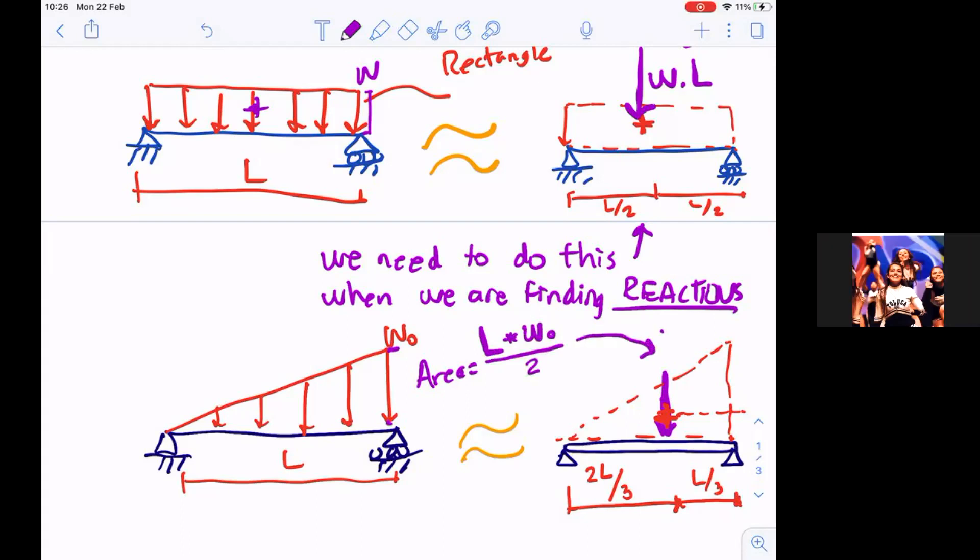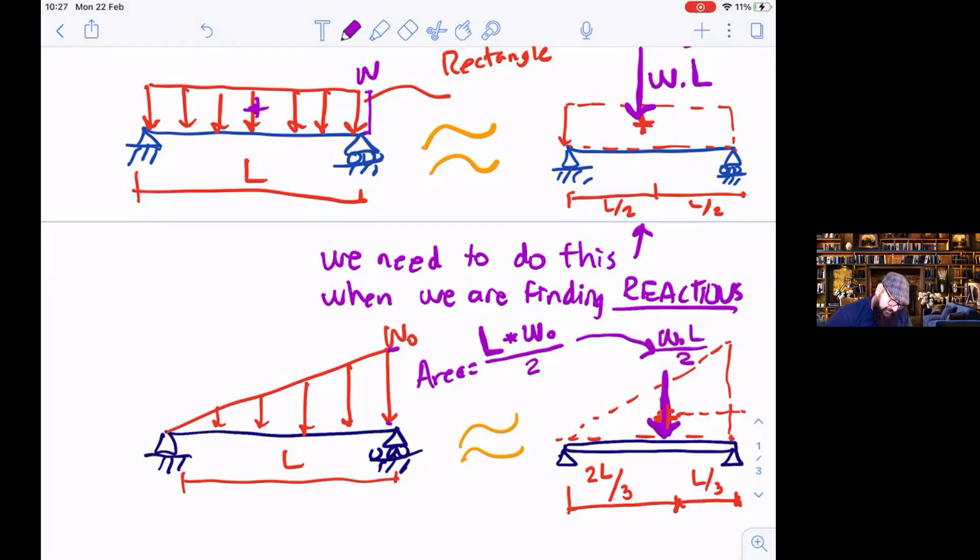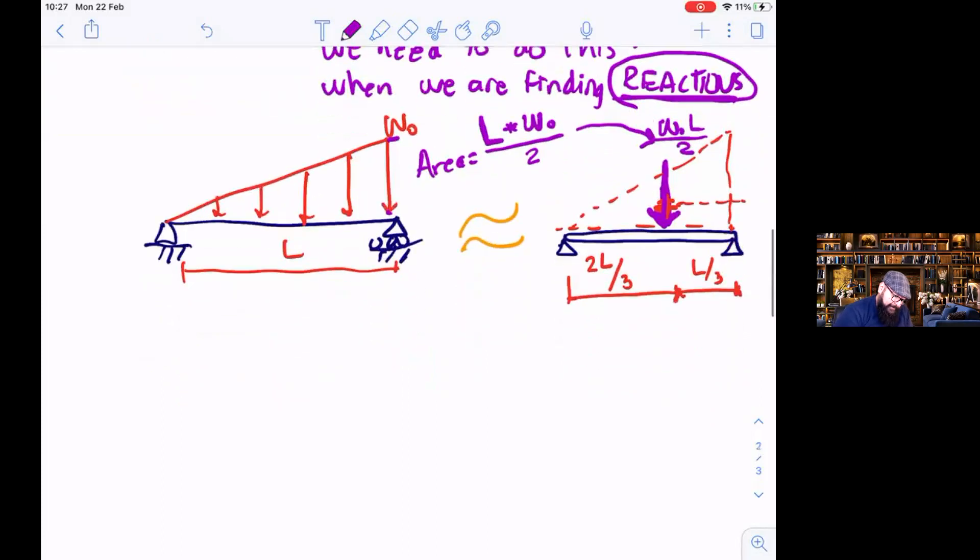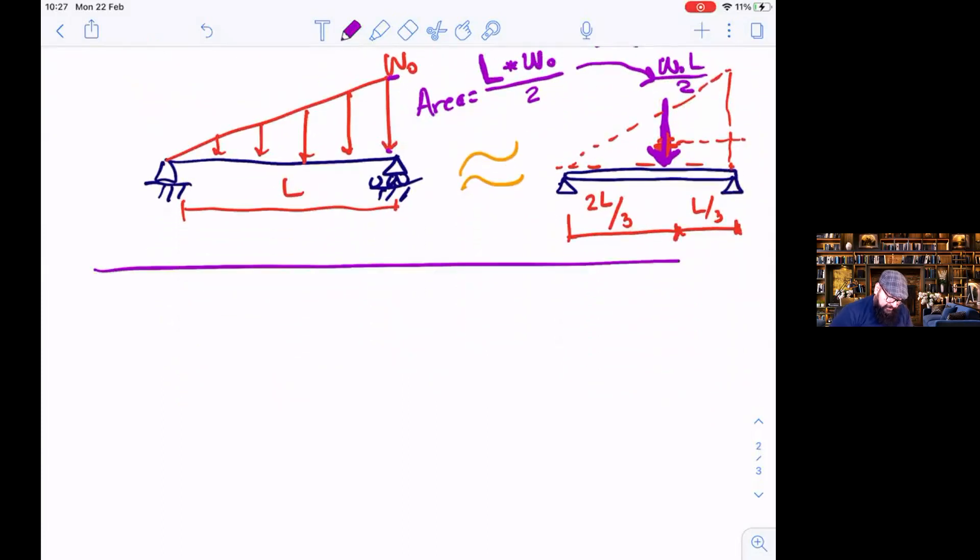So therefore, this is what we put here as a concentrated load, and only for reactions. So with that in mind, let us solve now an example of a diagram of beams with distributed loads. I'm going to draw a line here to indicate that we go now to the example.